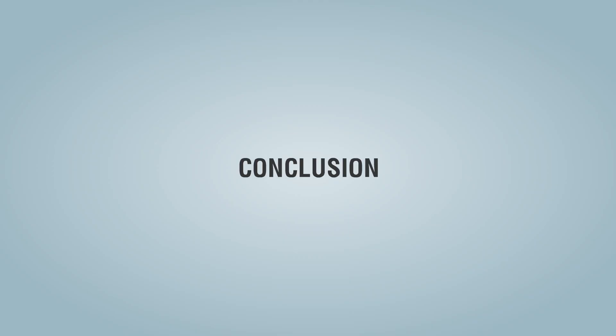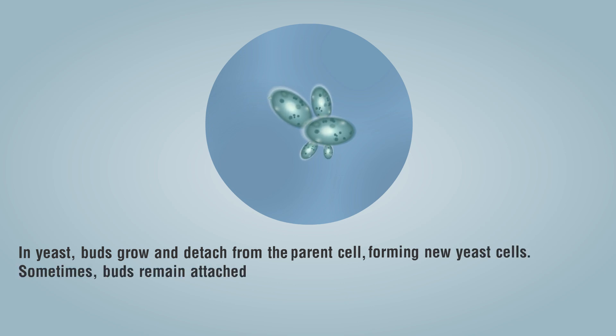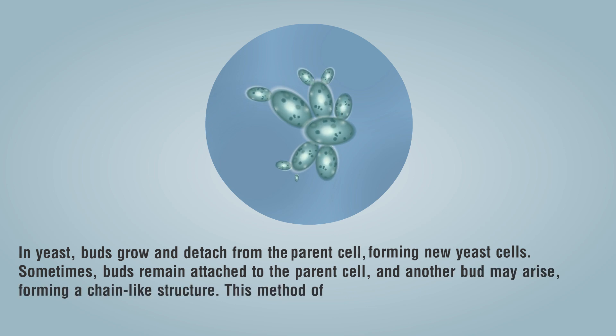Conclusion: In yeast, buds grow and detach from the parent cell, forming new yeast cells. Sometimes, buds remain attached to the parent cell and another bud may arise, forming a chain-like structure. This method of asexual reproduction is called budding.